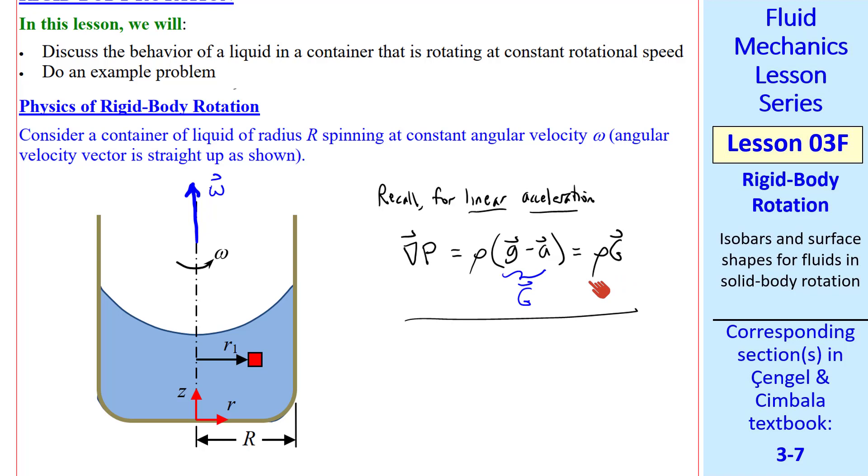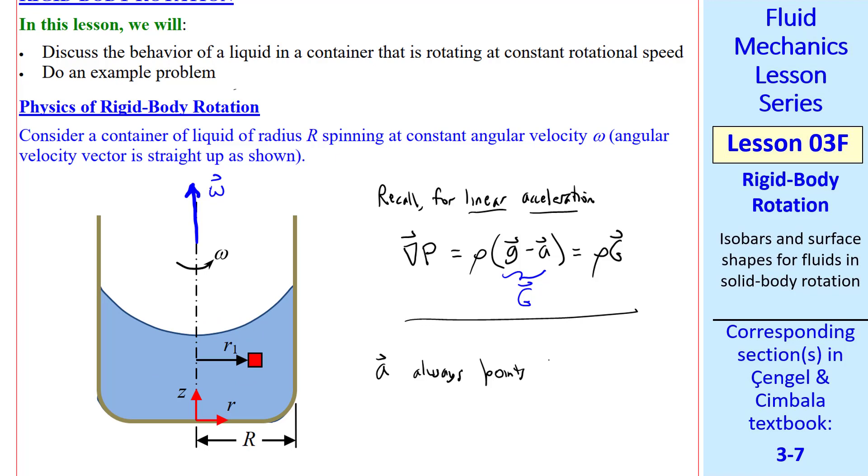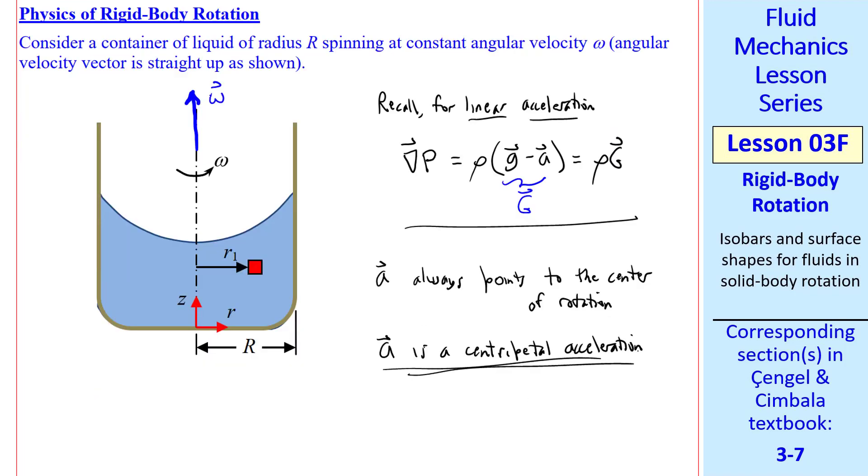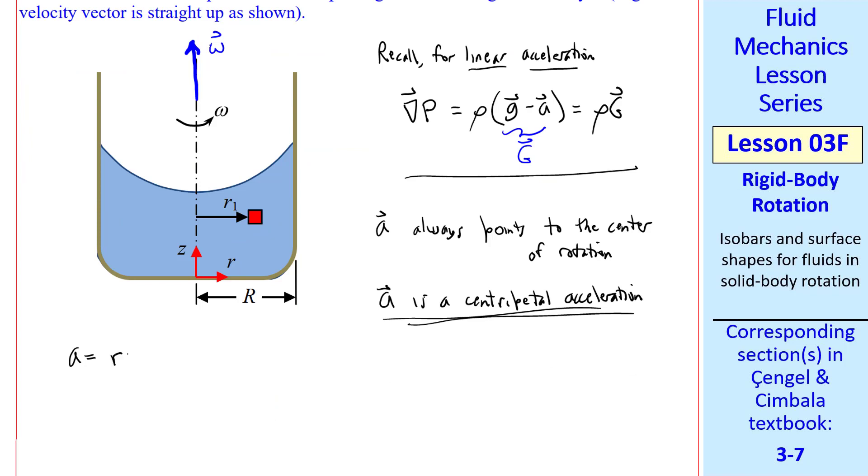We can still apply this equation in this rotating case. But keep in mind that capital G is not a constant, since the direction of the acceleration is constantly changing as this thing rotates around. However, A always points to the center of rotation. In other words, A is a centripetal acceleration. The magnitude of this acceleration is r omega squared, since the liquid is rotating in a constant RPM.